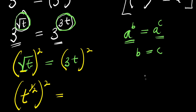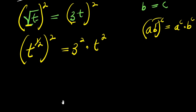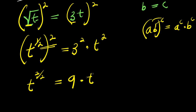Using the rule that (a times b) to the power of c equals a to the power of c times b to the power of c, we can distribute the exponent. So we raise 3 to the power of 2, and t to the power of 2. Multiplying the exponents gives t to the power of 1 over 2 times 2, which is 2 over 2. On the right side, we have 3 to the power of 2 times 3t, giving 9 times t over 2.